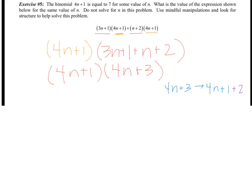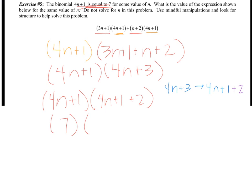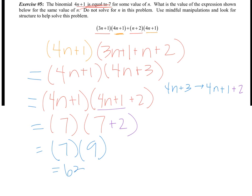The way to get from 4N plus 3 back to 4N plus 1 is by adding 2. So combining 3N plus 1 plus N plus 2 gives 4N plus 3, which can be rewritten as 4N plus 1 plus 2. Since 4N plus 1 equals 7, that becomes 7 plus 2, which is 9. So the full expression becomes 7 times 9, which equals 63. We used mindful manipulation from one section to help solve the next.